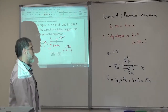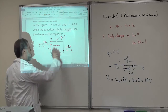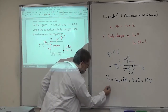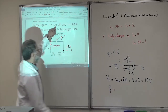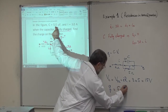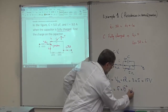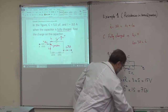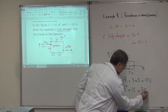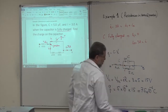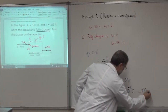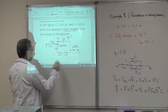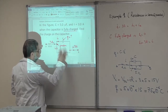We have a parallel combination between these resistors and the capacitor. So the charge on the capacitor Q = C × V_C = 5 × 10⁻⁶ farads times 15 volts, giving 75 × 10⁻⁶ coulombs, or 75 microcoulombs. That's the charge on the capacitor when it is fully charged, for a current of three amperes with these two resistors in series.